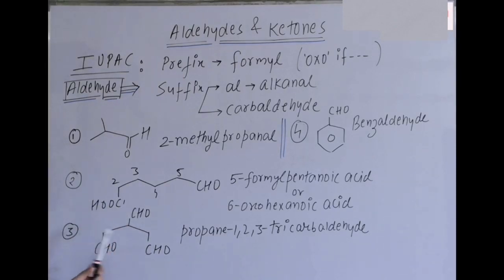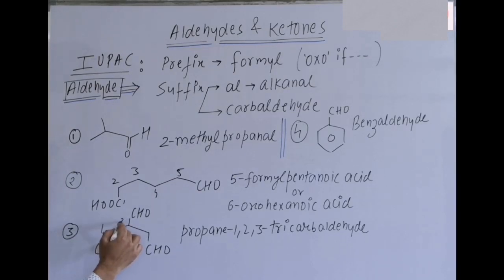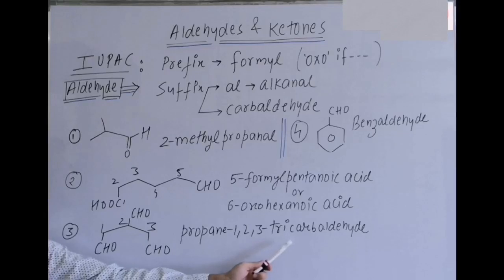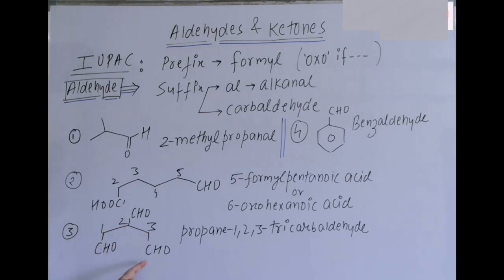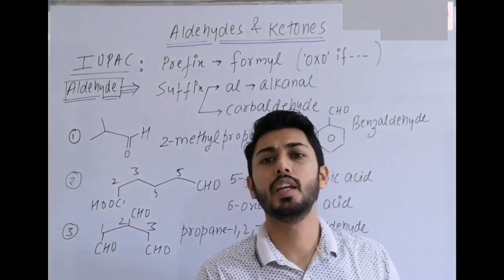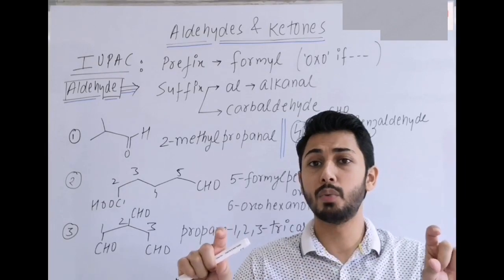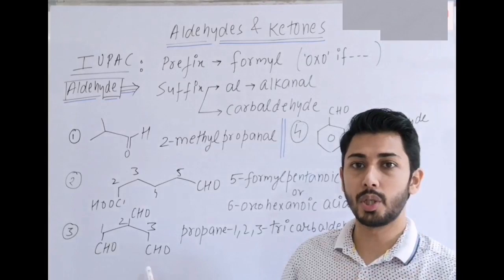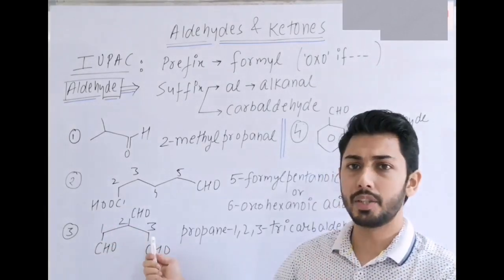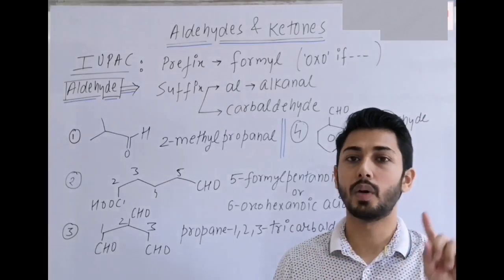Third example has three identical aldehyde functional groups. In this case we use the second type of suffix: parent chain 1, 2, 3 — CHO at first, second, and third positions — giving 'propane-1,2,3-tricarbaldehyde'. If any one CHO were counted in numbering, the others would become substituents, so whenever there are three or more identical CHO groups, always use the second suffix where their carbon is not counted in the parent chain.